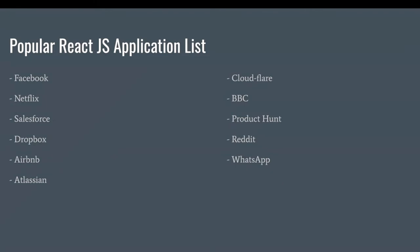These are some sample applications built with React. Most applications we regularly use — like Facebook, WhatsApp, and Netflix — everybody uses day by day. Other applications include Salesforce, Dropbox, Airbnb, Atlassian, Cloudflare, BBC, and Reddit. Most big companies are using ReactJS because of the speed, performance, build size, and simplicity — that's the reason these big companies use ReactJS.